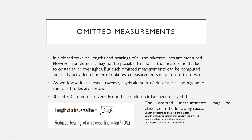First one is omitted measurement. We can measure the length of the traverse. Sometimes we can omit the measurements, but we can also calculate the omitted measurements.